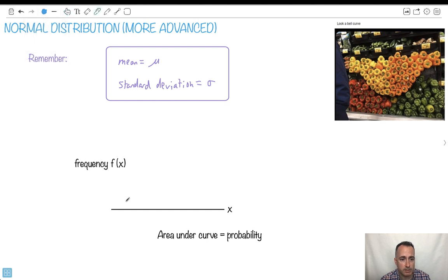If we do the graph right here, this is what a normal distribution looks like. This right here, the middle point, would be the mean. This would be the mean plus one standard deviation, this would be the mean minus one standard deviation. And don't forget, the area under the curve is a probability.